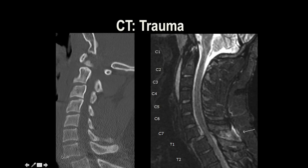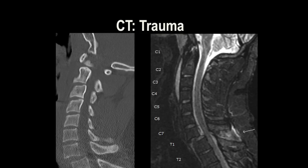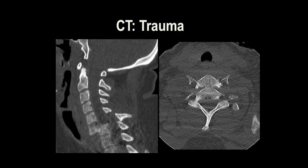We see the indirect signs on CT, but we don't see the findings visible on MRI — that's an important example of when MRI can be helpful. We also have some increased signal in the anterior cervical spine, which we don't necessarily see either directly or indirectly on CT.